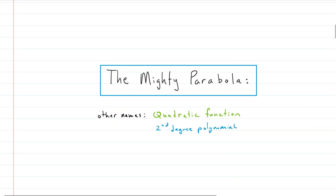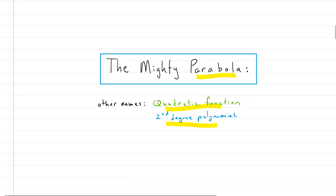There are lots of ways to refer to a quadratic equation or quadratic function. There are three specific ones you see really often. All three are synonyms — they mean the exact same thing: parabola, quadratic function, and second-degree polynomial. Don't be confused if you see them used interchangeably.